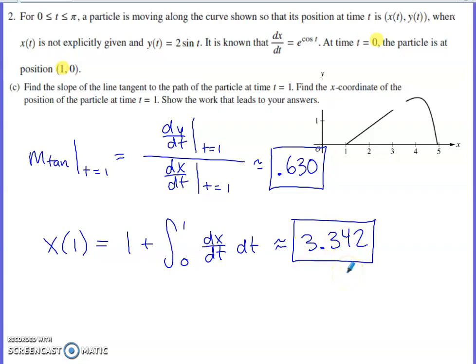As always, with these calculator FRQs, you definitely need to make sure that your final answer is accurate to that third digit past the decimal. I go with rounding to the third digit past the decimal. You can also truncate at the third digit and cut off from the fourth digit on. Either of those is fine for your final answer.